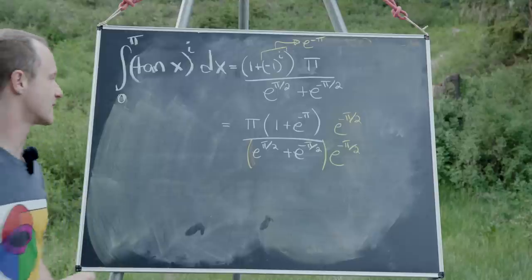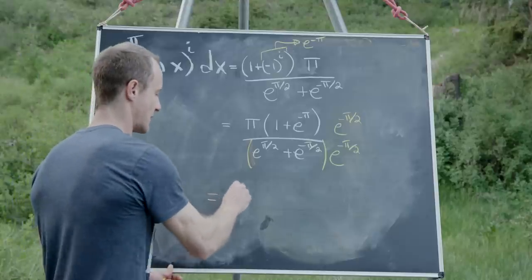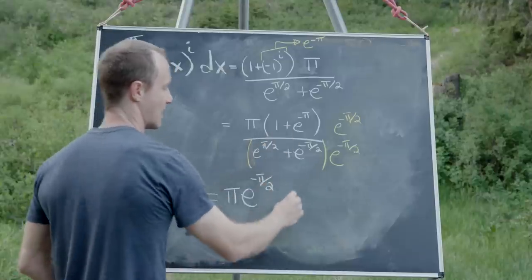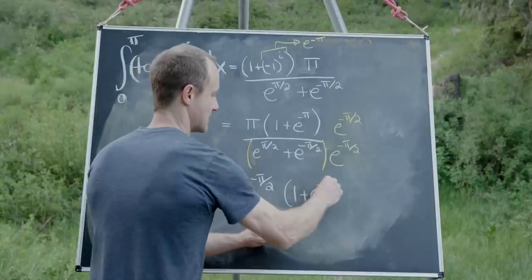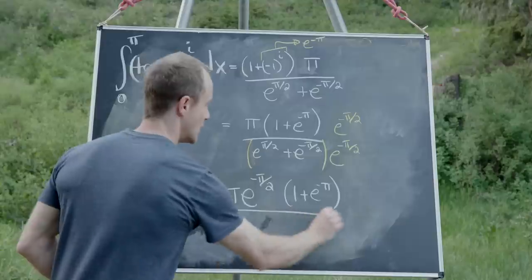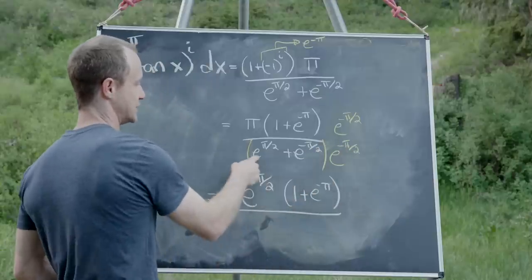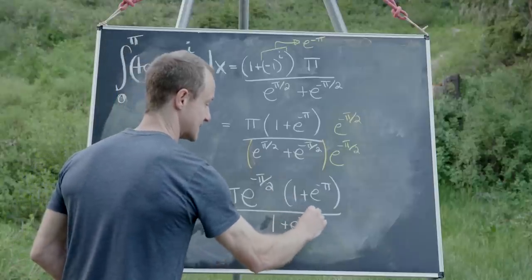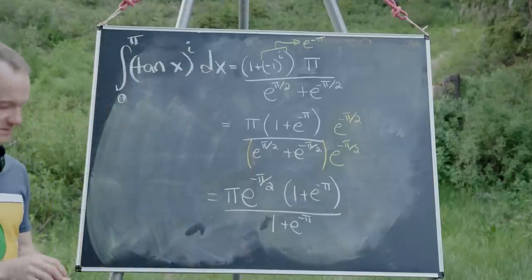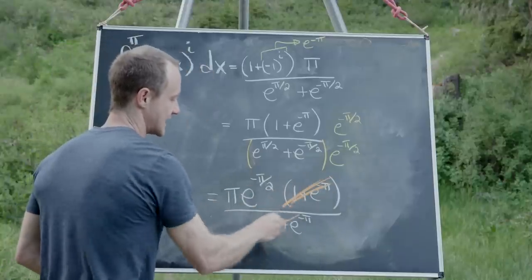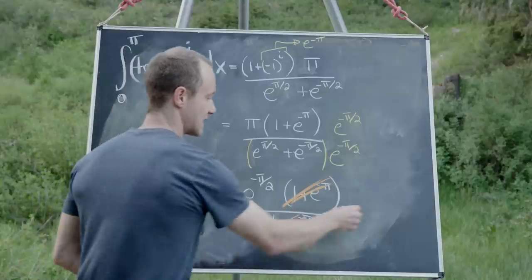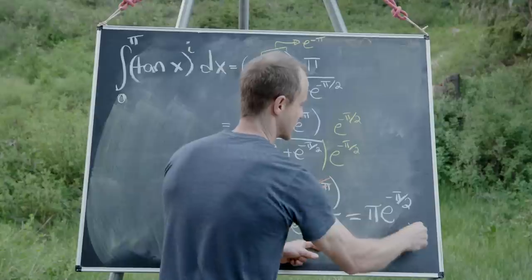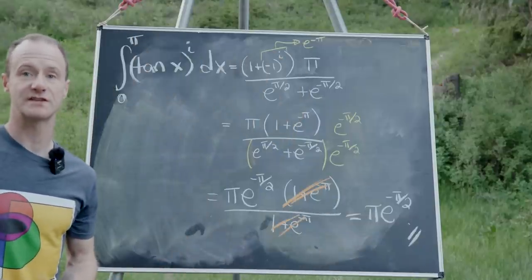In the numerator we have π times e^(−π/2) times (1 + e^(−π)). Distributing through, the e^(−π/2) and e^(π/2) cancel down to 1, and then this builds up to e^(−π). This e^(−π) term cancels with the other e^(−π) term, leaving us in the end with π times e^(−π/2). And that's our final answer.